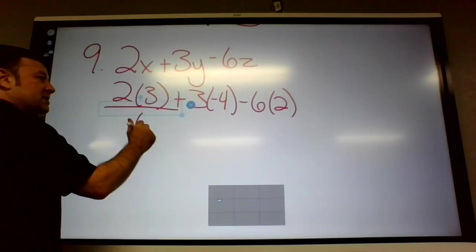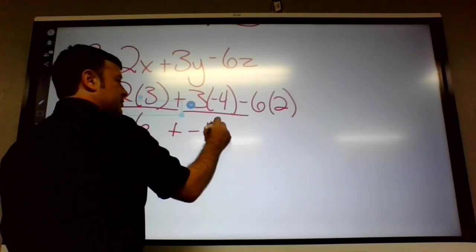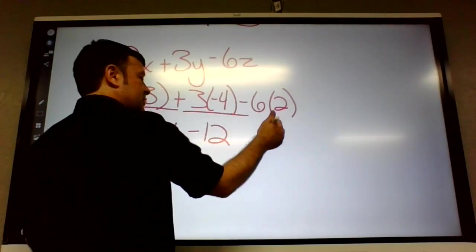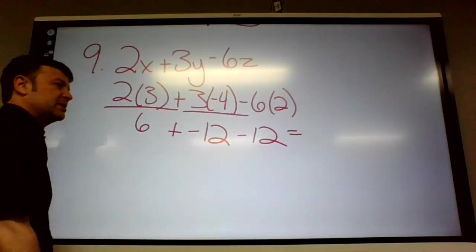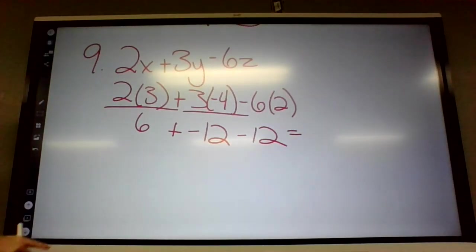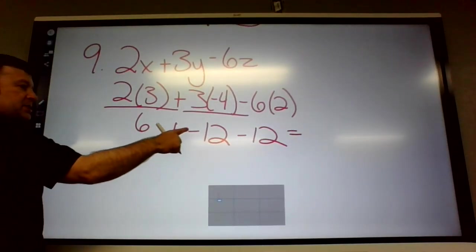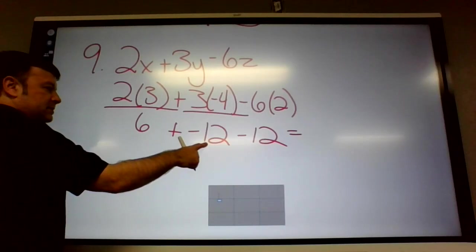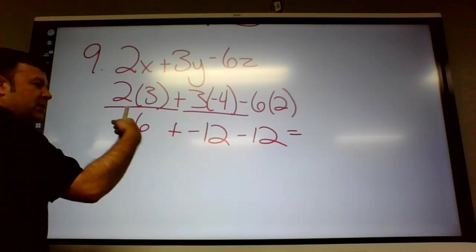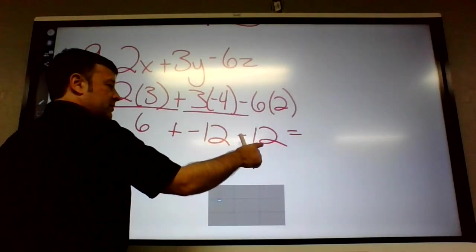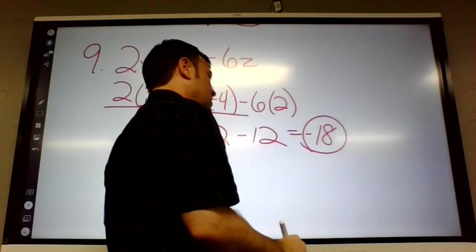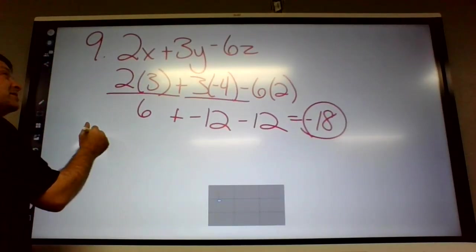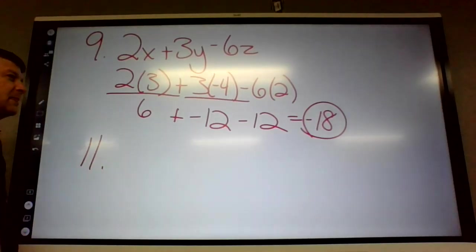That's it. Plug that in your calculator. Should be no problem. Some of you might be faster without a calculator. 2 times 3 is 6. 3 times negative 4 is negative 12. Negative 6 times 2 is negative 12. 6 plus negative 12, it's like minus 12, negative 6 minus 12, negative 18.